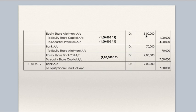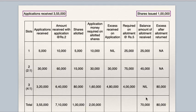Allotment money due: equity share allotment to equity share capital 1,00,000 × 1 = 1,00,000; to securities premium 1,00,000 × 4 = 4,00,000 (premium amount is Rs. 4). Bank to allotment 70,000 received — 25,000 from first slot plus 45,000 from second slot, total 70,000. Whatever was due has been received.